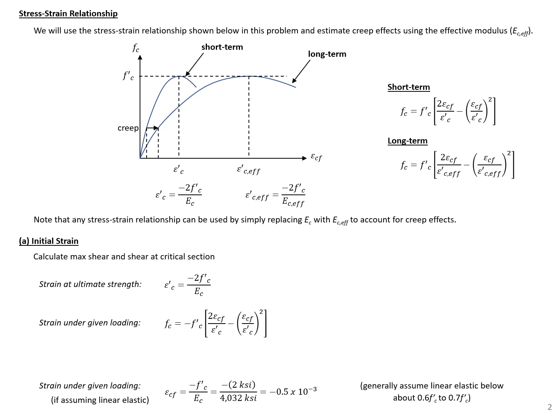The stress-strain relationship we'll use is a simple parabolic relationship based on the modified Hognestad relationship, where our strain at ultimate is defined by that expression. We're going to account for creep effects using the effective modulus, EC effective. Essentially, anywhere in our stress-strain relationship where we have EC, we'll replace it with EC effective. In this case, it only appears in our strain at ultimate stress term, so we'll replace that with EC effective and move forward.